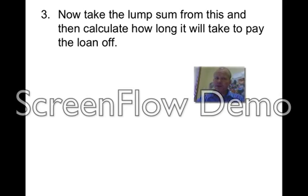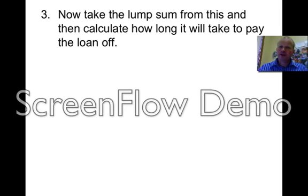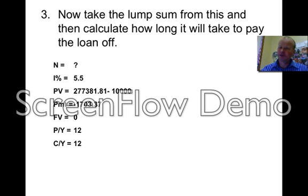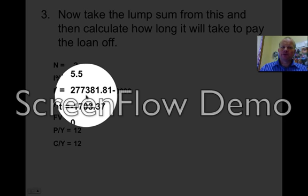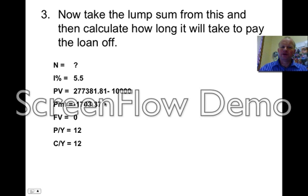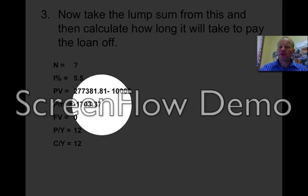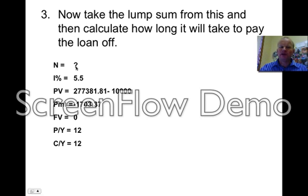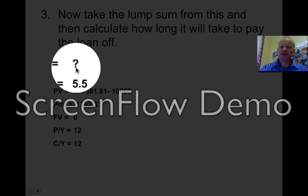So that's the first part. Now you've got that $10,000 lump sum, so what you do is you just take that off the principal, or the PV. So you have 5.5 as your rate, $277,381.81 is your balance from the previous step, and you're taking $10,000 away from it, using the same PMT as before. The thing is, you don't know what N is — you're trying to find out how long it will take to pay off the loan now that you've taken this extra $10,000 off.